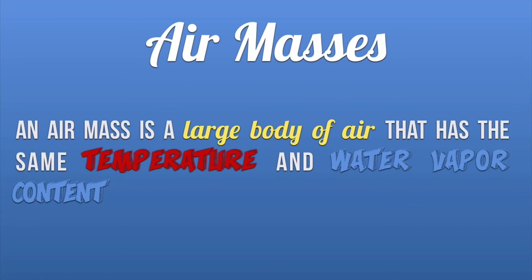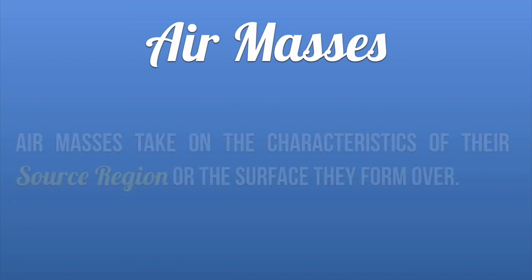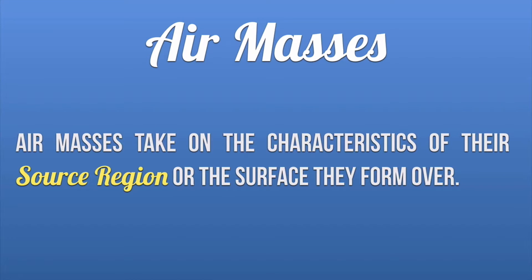Let's talk about air masses. An air mass is a large body of air that has the same temperature and water vapor content. Air masses can be huge, covering hundreds or thousands of square miles. An air mass takes on the characteristics of the surface region, or the area over which it forms. An air mass that forms over the ocean is going to be humid, and one that forms over land is going to be dry.